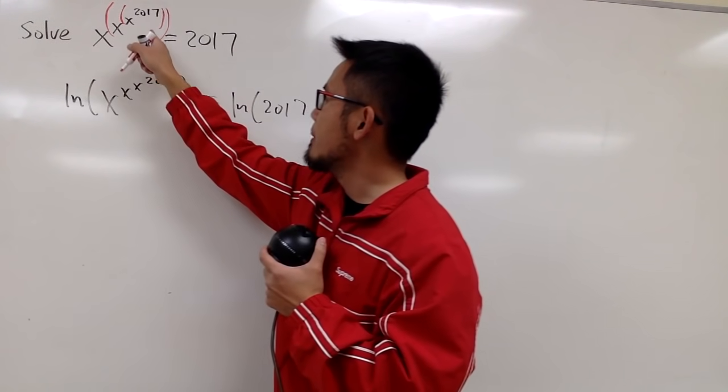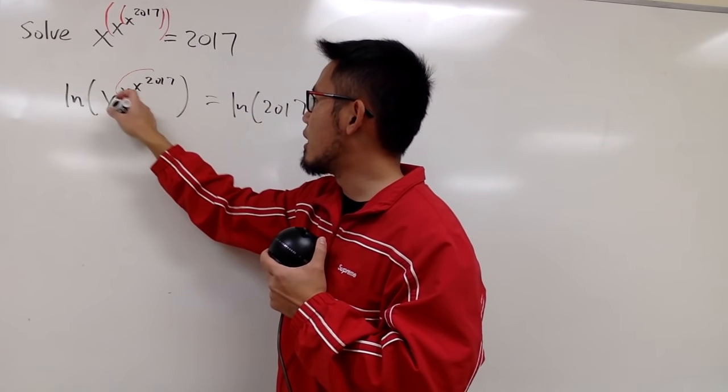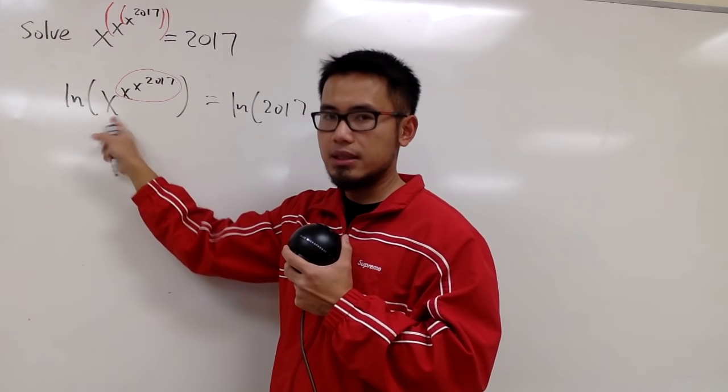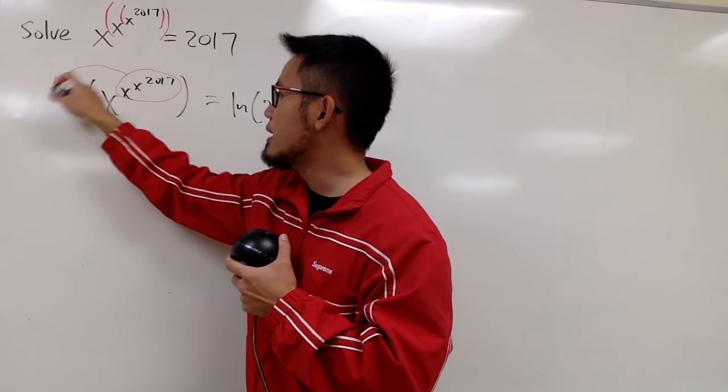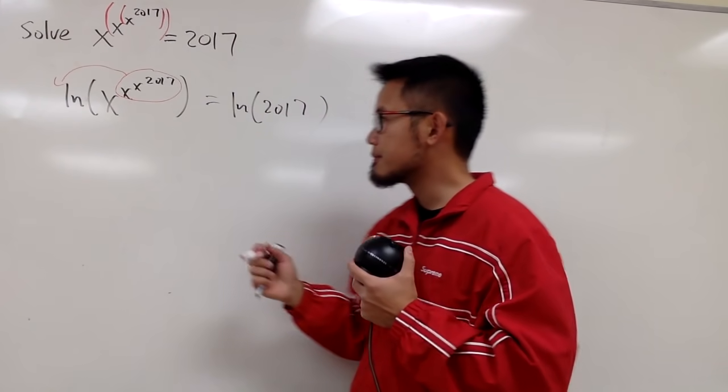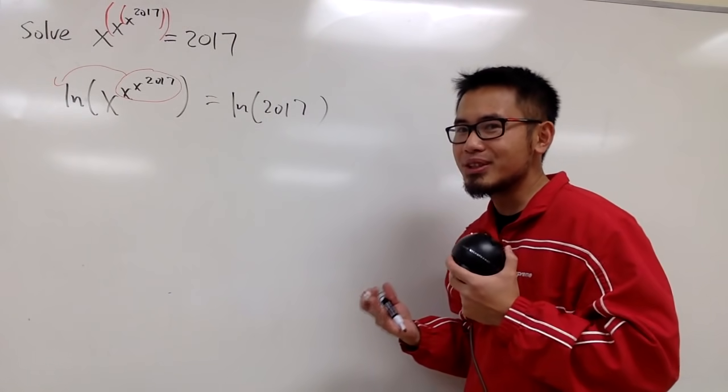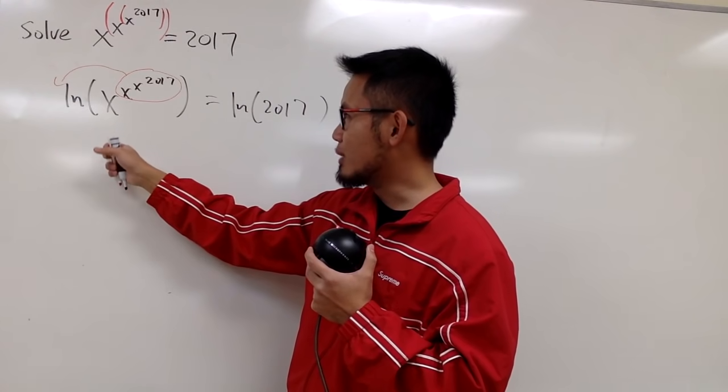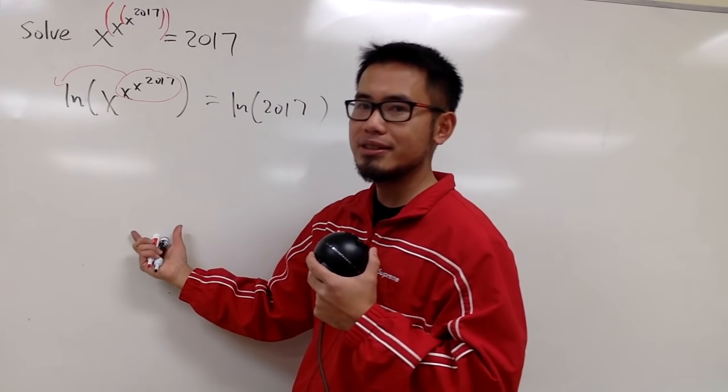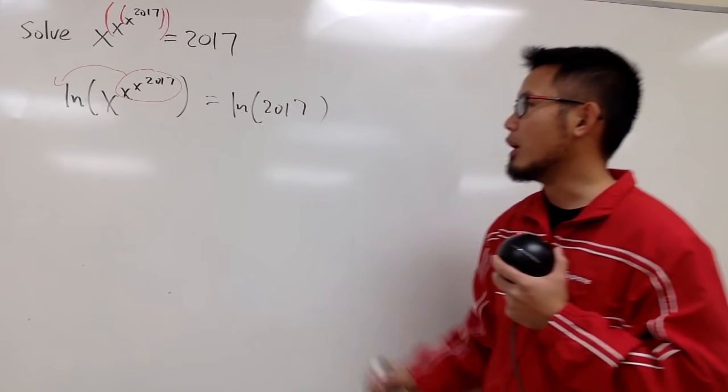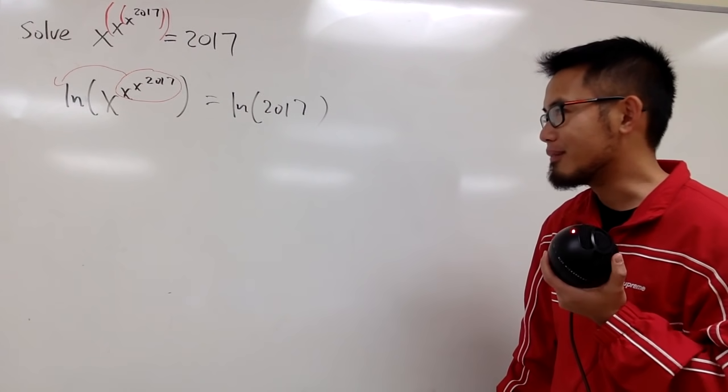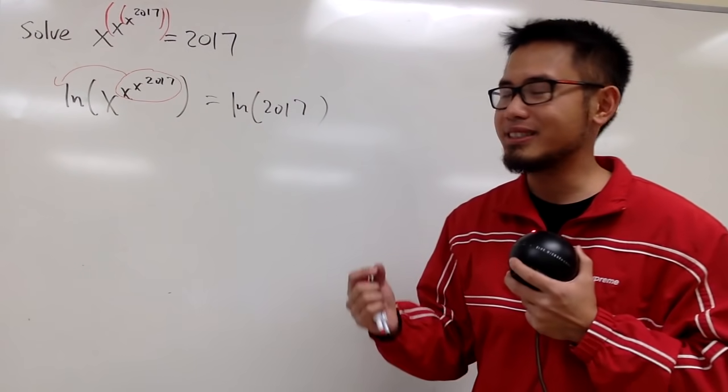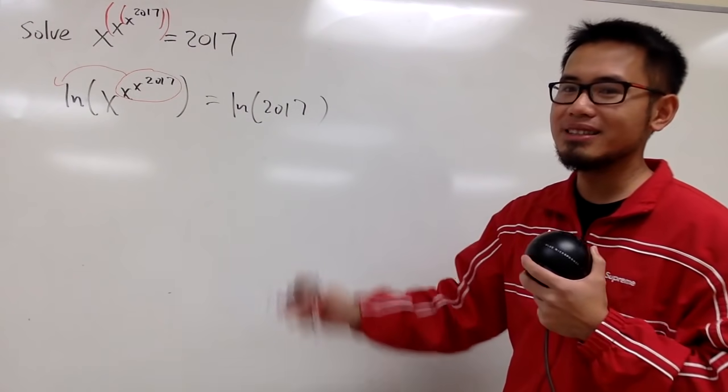And as I mentioned earlier, this part is the exponent for this x. So by one of the ln properties, yes, I can bring that to the front. But I don't think that's going to be any helpful, because we will have x to the x to the 2017th power times lnx, and that's equal to ln of 2017. I have no idea how to approach from there to isolate that x. You can try if you may, but I will leave that to you guys.